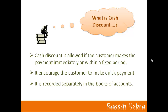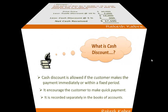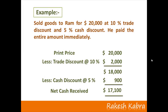Let's take an example. Goods were sold to Ram for $20,000 at 10% trade discount and 5% cash discount, and he paid the entire amount immediately. After subtracting the trade discount, the net amount is $18,000. Since he paid immediately, we allow cash discount at 5% of $18,000, which is $900. After allowing cash discount, the amount received from Ram is $17,100.